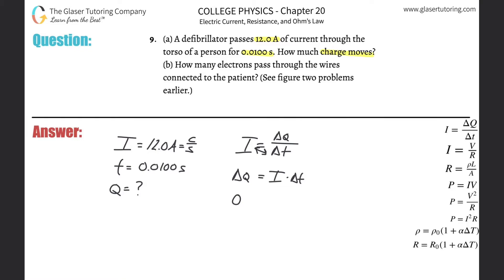So if I have to find the amount of charge, it's the same thing as the change in charge. Just plug in the values. So this is 12 multiplied by the time, which is 0.01. And then we're going to get a value of 0.12, 0.12 coulombs.